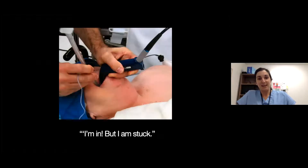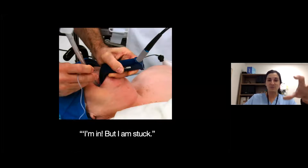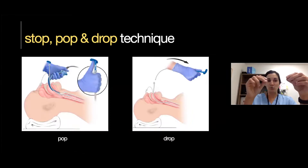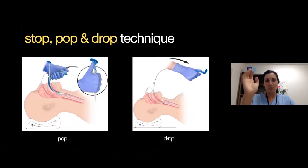Pitfall number three: you've done all those maneuvers, entered with the right approach angle, created space with your GlideScope — you're at the cords, but still can't pass the tube through. This is normal given the nature of the GlideScope and the rigid stylet. When that happens, use the stop, pop, and drop technique: stop when you're at or just above the cords, pop the stylet out, and drop — push the ET tube down with less of a sharp angle. As someone removes the stylet, you push the tube through. It will go through the cords without any problem.